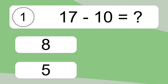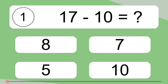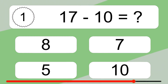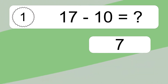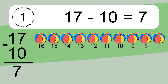17 minus 10 equals what? 17 minus 10 equals 7.